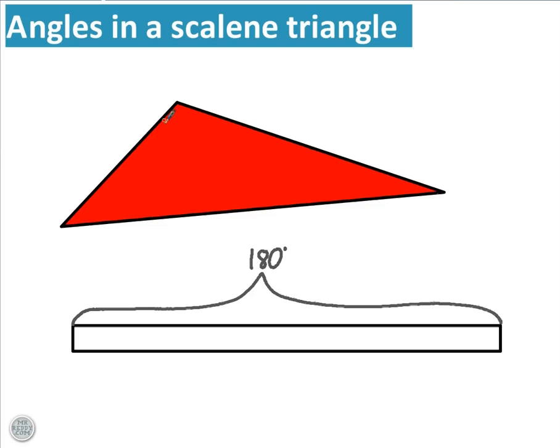The thing about scalene triangles is that all the angles are different. So this angle, call it 100 degrees, is different to this angle, let's call that 30 degrees, which is different to this angle. Now we don't know what that angle is, but we can work it out from the knowledge that all three of these together have to give us 180 degrees.